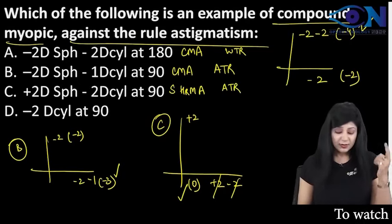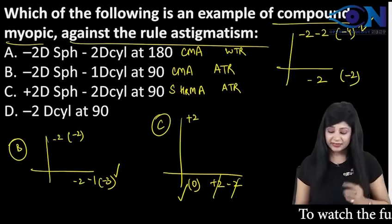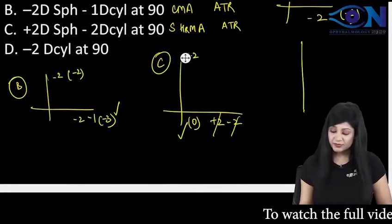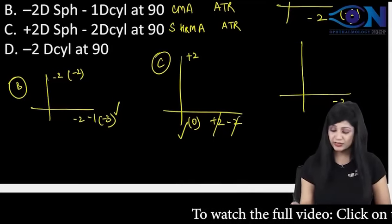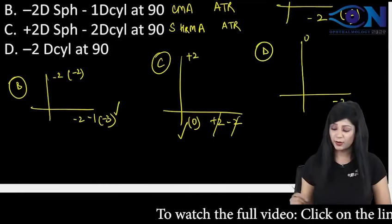Coming to the D option: minus 2 diopter cylinder at 90 degree. So if I am saying that minus 2 I am giving vertically so this will act horizontally and this becomes 0. This is the D option.